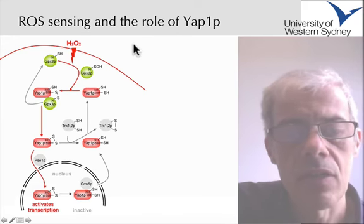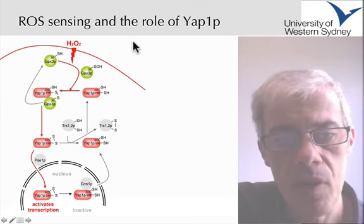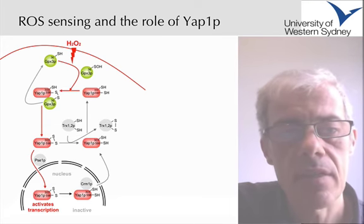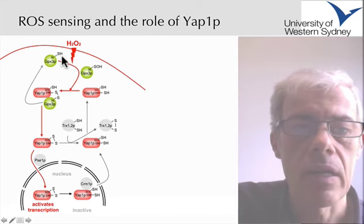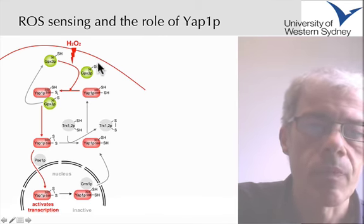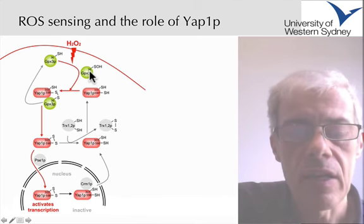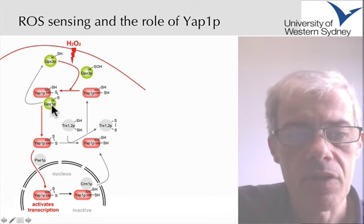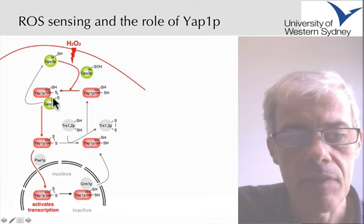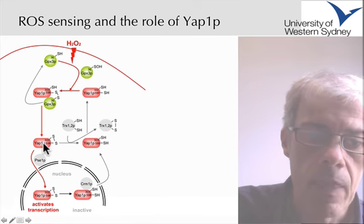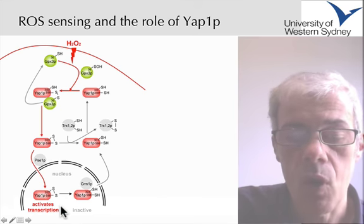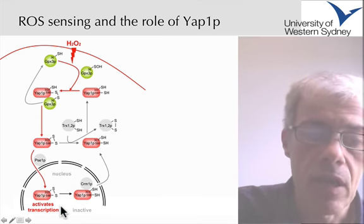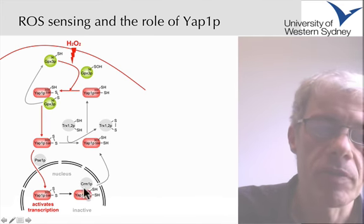Here we have a schematic showing the yeast cell response to hydrogen peroxide. In green, we have a sensor protein which picks up the oxidative damage due to the hydrogen peroxide. This sensor protein then interacts with GAP1 to form an oxidized intermediate, transferring the oxidative damage onto the GAP1 transcription factor. This transcription factor can then move into the nucleus, activate genes responsible for oxidant defense, and over time there is a recycling of the transcription factor back into the cytosol.